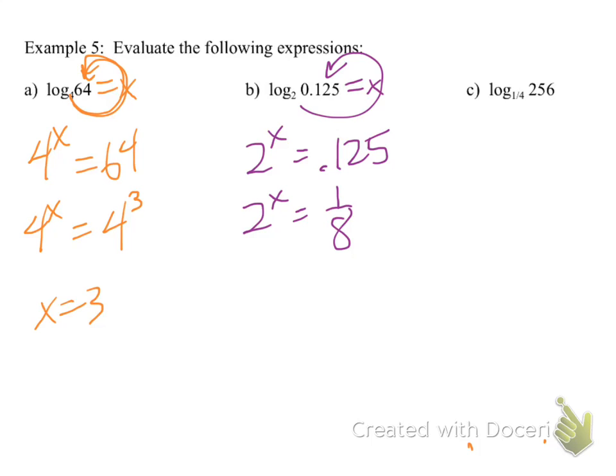Again, let's change this 8 into a base of 2. We can rewrite that as 2^x = 1/2^3. Well, we can't say that x equals 3 because this is on the numerator, and this is on the denominator. How can we bring that up to the numerator? We can rewrite that as 2^(-3). And again, 2^(-3) has to equal 2^(-3), so x has to equal -3.